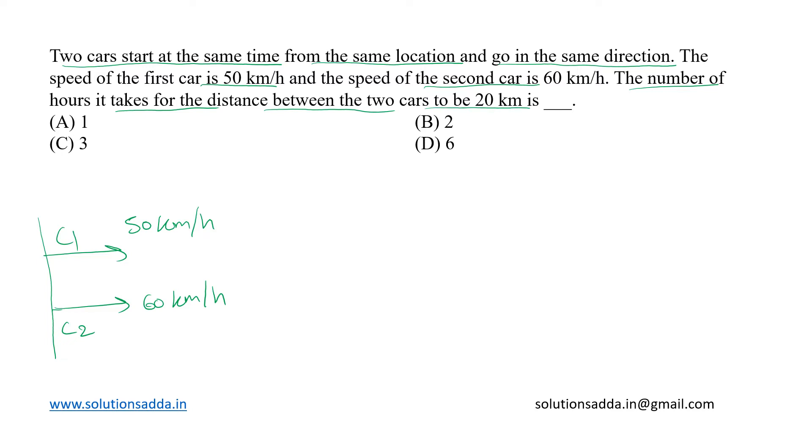We know that the formula for distance is speed into time. Hence for car one, the distance covered with respect to time will be its speed, that is 50 into time. The unit of speed given here is kilometer per hour, hence we take the unit of time T to be in hours so that the distance covered will be in kilometers.